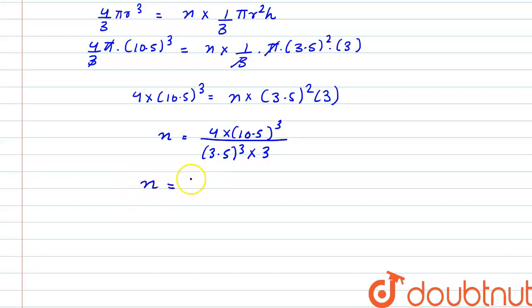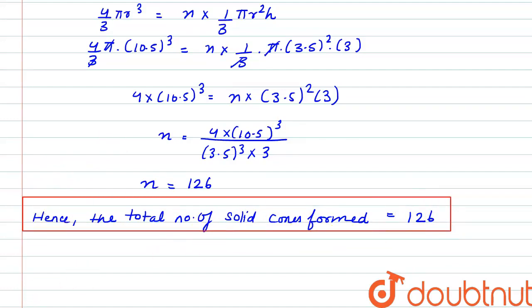From here we have the value of n to be 126. Hence, the total number of solid cones formed is equal to 126. So this is the desired solution to the question. Thank you.